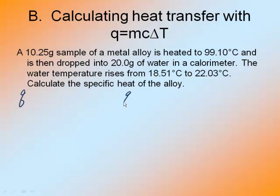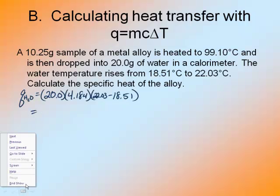Same process. The Q of my metal is equal to the Q of the water, but opposite in sign. Since my metal is giving up heat, it is exothermic, so its Q is going to be negative. So I'm going to calculate the Q of the water first because it wants information about the metal. My water has a mass of 20 grams, 4.184 joules, and its temperature change is 22.03 minus 18.51.